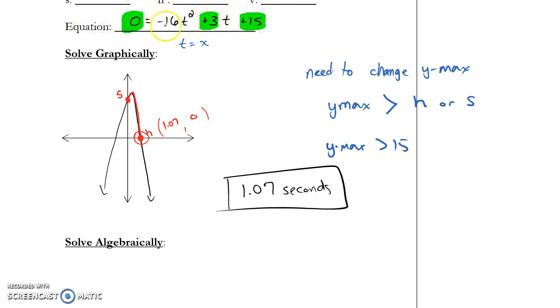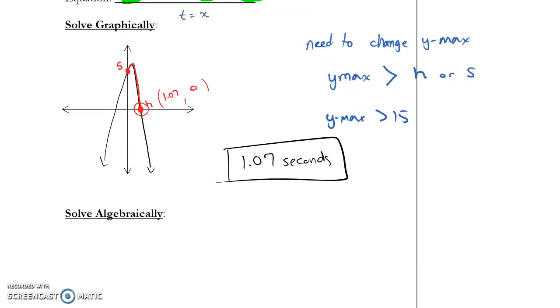Here's my quadratic equation. Remember, T and X are interchangeable. It's already in standard form, because I have my X squared, X constant, and I have it equal to zero. That means I can use the quadratic formula, in which case A is negative 16, B is 3, and C is 15.